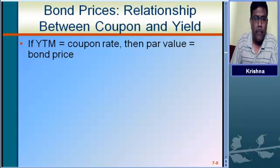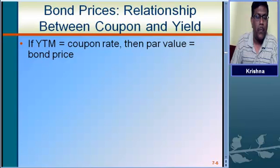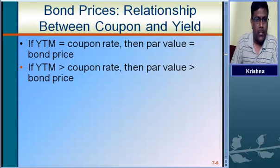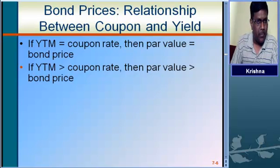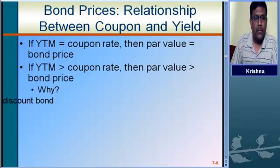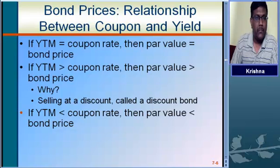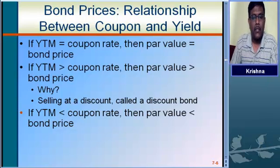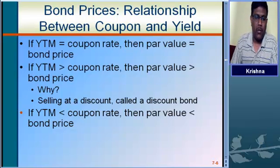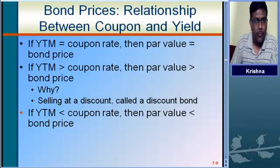We will see the relationship between YTM and the coupon rate. If YTM equals the coupon rate, then the par value will be equal to the bond price. If YTM is more than the coupon rate, then the par value will be more than the bond price. If YTM is less than the coupon rate, then the par value will be less than the bond price. This relationship we have to study carefully because at the time of doing advanced problems, it will be very useful.